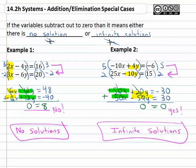So in this way, if the variables subtract out completely to zero, it means we either have no solution if it doesn't make sense, or we have infinite solutions if it does make sense.